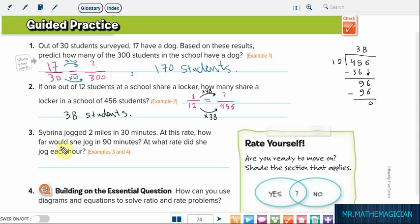Now Problem 3: Sabrina jogged 2 miles in 30 minutes. At this rate, how far would she jog in 90 minutes? At what rate did she jog each hour? So we have two questions now, two parts. Let's answer the first part.